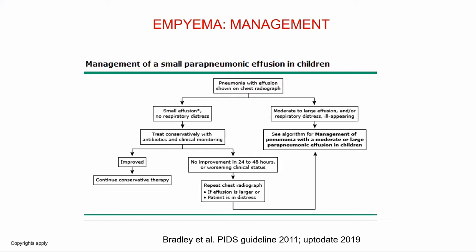How do you manage a parapneumonic effusion in children? This is a flowchart from UpToDate. Starting with a child with pneumonia and effusion on chest radiograph: if the effusion is small and the child is not in respiratory distress, you can treat with antibiotics and wait and see. Many children will improve — around 10% of all pneumonias have some pleural effusion, and most of those children won't even be seen in hospital. If there is no improvement in 24 to 48 hours or the child is deteriorating, repeat the chest radiograph and if the effusion is becoming bigger, move to management of a moderate-to-large parapneumonic effusion.